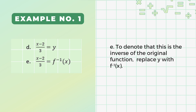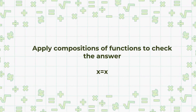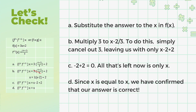In order to check if the answer is correct, apply the composition of functions, wherein x must equal x. Let's try checking our answer in example 1. Let's write f-circle-inverse of f to denote that this is a composition of functions. Substitute the answer to the x in f(x). Multiply 3 by (x minus 2) over 3 — we can simply cancel out the 3, leaving us with x minus 2 plus 2. Adding negative 2 and positive 2 gives 0, so all that's left is x. Since x equals x, we have confirmed that our answer is correct.